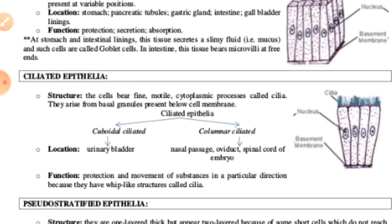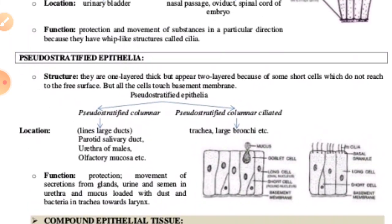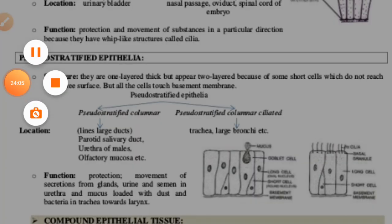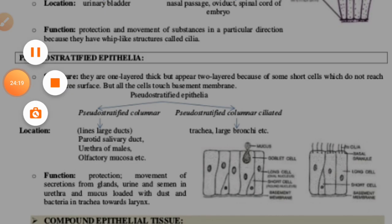Today we have talked about epithelial tissue, focusing on simple epithelial tissues — squamous epithelium, simple cuboidal epithelium, simple columnar epithelium, simple ciliated epithelium, and pseudostratified epithelium. Students must complete their notes. In the next period, we will talk about the compound epithelial tissue. Please note down your work and prepare your notes. Thank you.